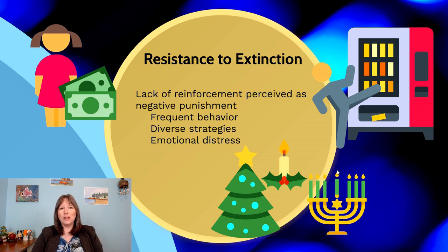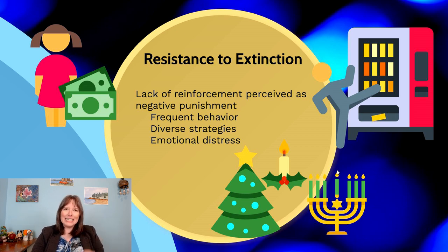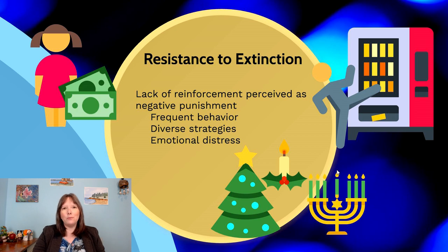Sometimes when we expect to be reinforced but aren't, not only do we continue the behavior, but we experience an intense peak of behavior known as resistance to extinction. This doesn't happen every time reinforcement ceases, but it does happen under certain conditions.